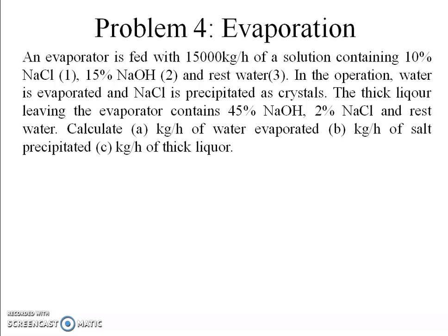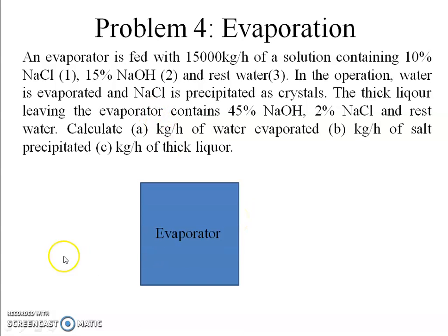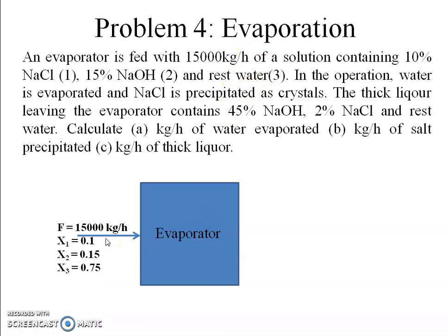On first look this problem seems difficult, but let's tackle it with our method. First, draw a flowchart: draw a box labeled evaporator, and add the feed of 15,000 kg per hour. Mark the compositions: mass fraction of NaCl is 0.1, mass fraction of NaOH is 0.15, and mass fraction of water is 1 minus 0.1 minus 0.15 equals 0.75.